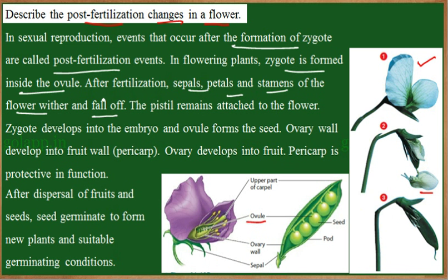In some cases the sepals would still be present. The pistil remains attached to the flower. The zygote develops into the embryo, and the ovule develops into the seed. The ovary, in which the ovule is present, develops into the fruit. In the case of the pea plant, the fruit is the pod. The wall of the ovary develops into the wall of the fruit, which is called the pericarp.